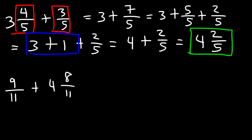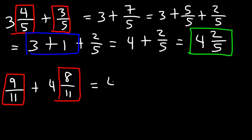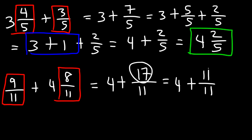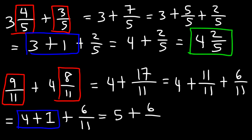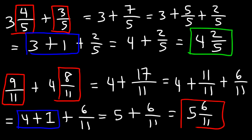Now let's move on to the next one. Let's add 9 over 11 plus 8 over 11. 9 plus 8 is 17, so we're going to have 4 plus 17 over 11. We need to break this down to 4 plus 11 over 11, and 17 minus 11 is 6, so the missing fraction will be 6 over 11. 11 over 11 is 1, and 4 plus 1 is 5. So we're going to have 5 plus 6 over 11, which is 5 and 6 elevenths.